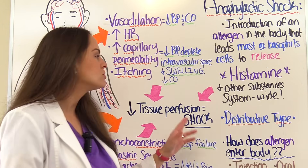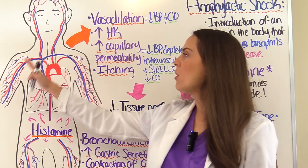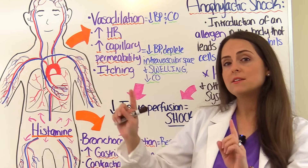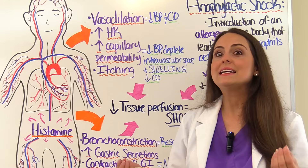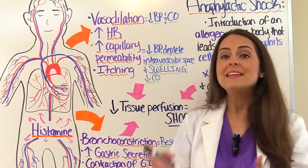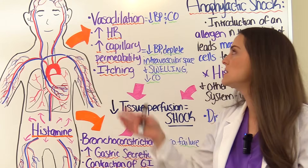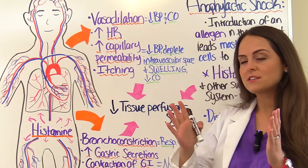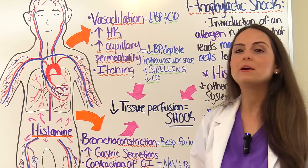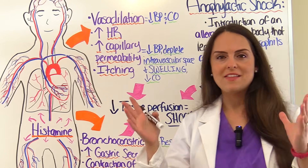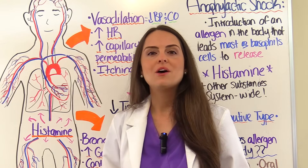Anaphylactic shock is a type of distributive shock, which means that the small vessels in the body that deliver nutrients — specifically oxygen — to the cells that make up our tissues and organs are disrupted. They're having an issue distributing blood flow due to the effects of histamine. This causes massive vasodilation and increased capillary permeability, shifting fluid out of the intravascular space into the interstitial space.